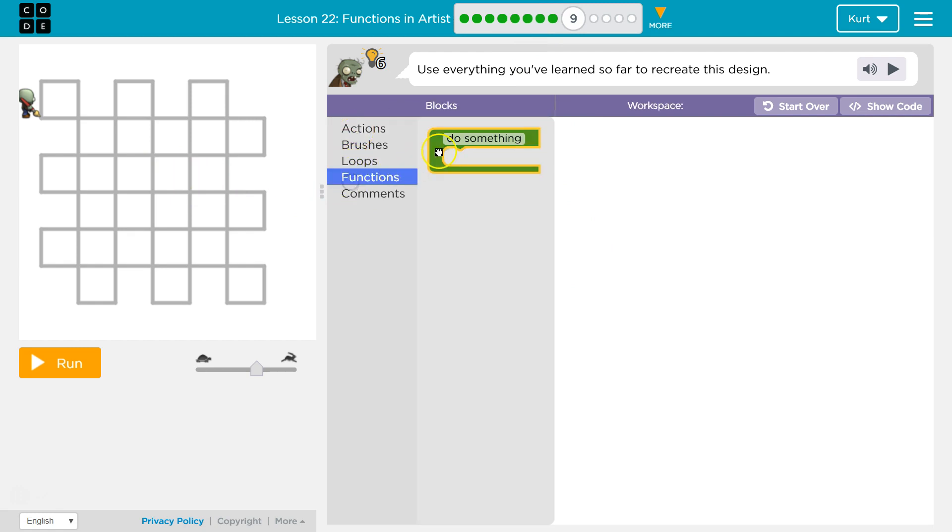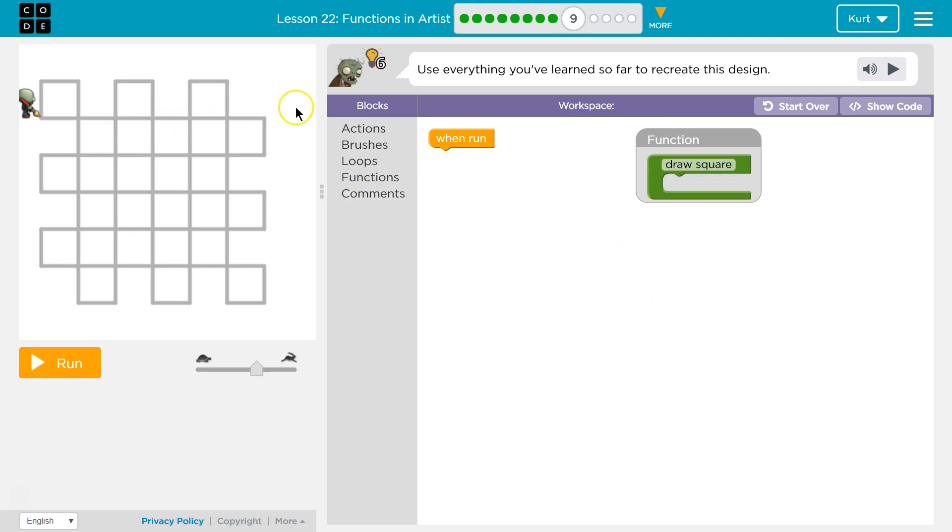So let's start off like we did before with a draw square function. And perfect. All right, how many sides are there to a square? Four. So, oh, and they already set that to four.